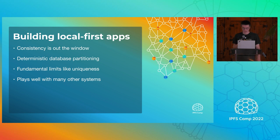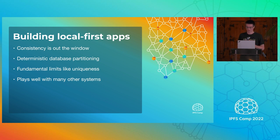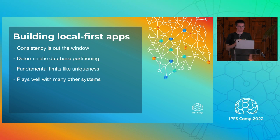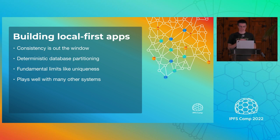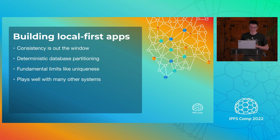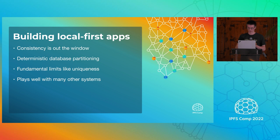There are a few fundamental limits, and one of them is uniqueness — it's very difficult to pick a winner between two different updates when any update can be merged at a later point. I like to think they play well with other systems, so you can have a system with consensus like a blockchain and point to one of these CRDT logs.